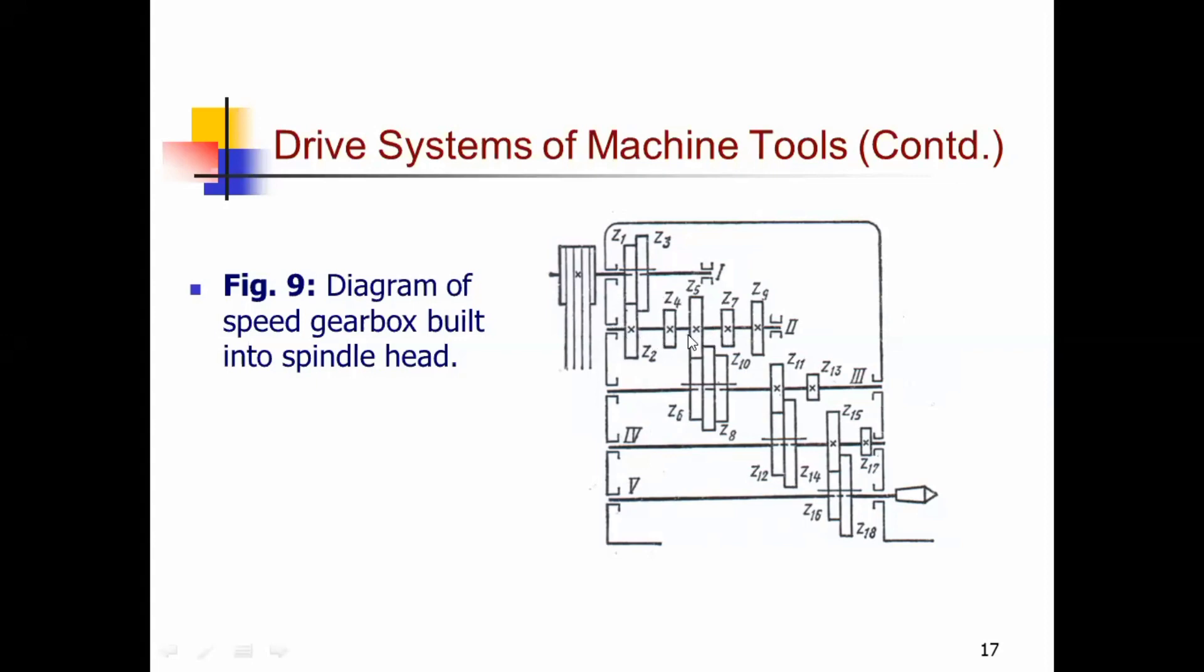On the first shaft, you have a gear arrangement. The first gear has different speed options. With three gears providing six speeds on shaft three, you can achieve multiple intermediate speeds possible.